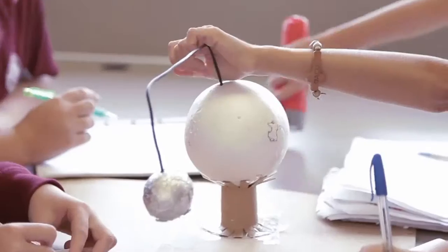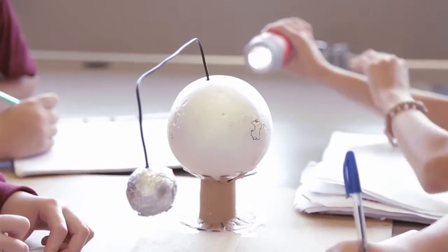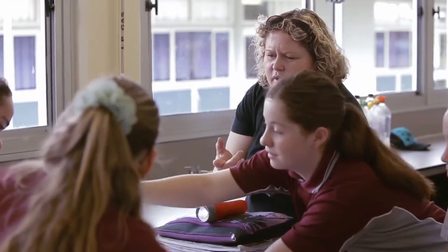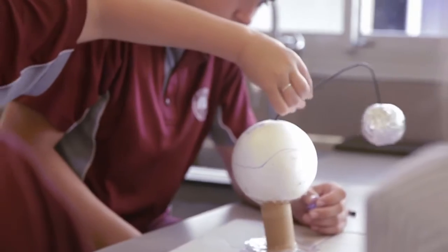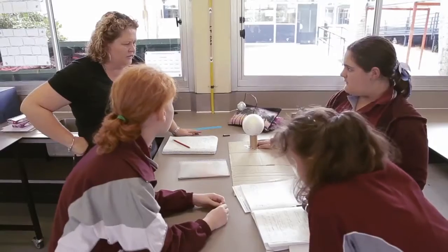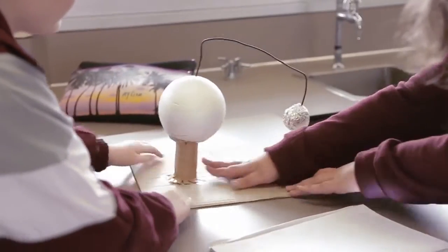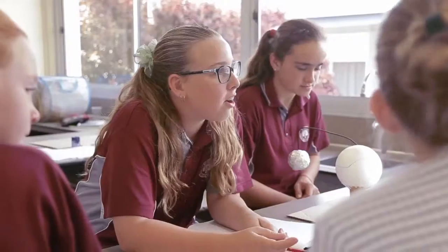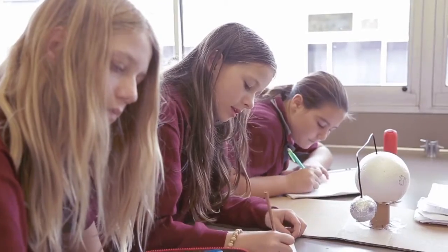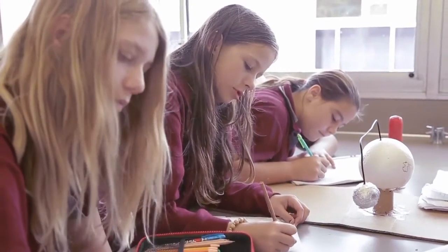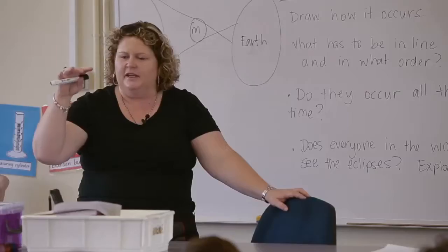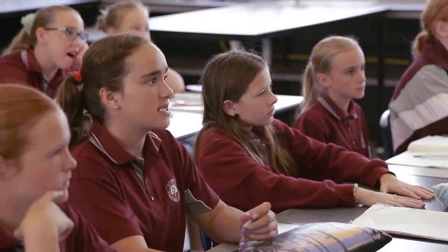The 5Es is an inquiry-based approach to science. Hooking them in with an engage, then letting them play with things, explore things, build their own knowledge. And then we go into an explain phase and of course afterwards there's elaborate and an evaluate. To get them to start thinking about what they're seeing and making observations, they need to explore a little bit so they can build some of that knowledge themselves before we go into a more detailed explanation.